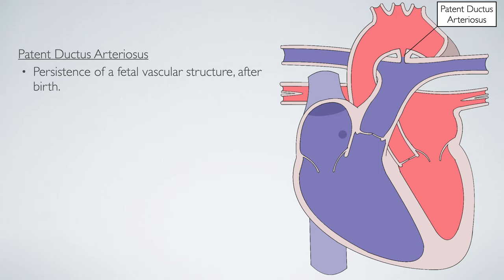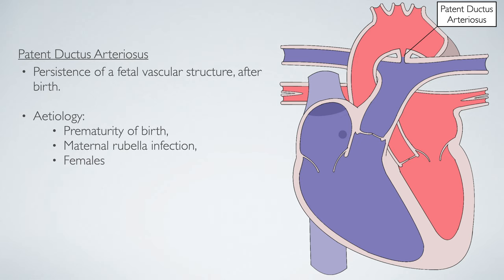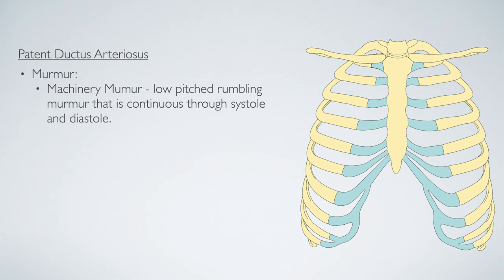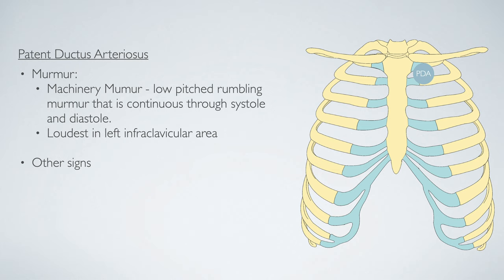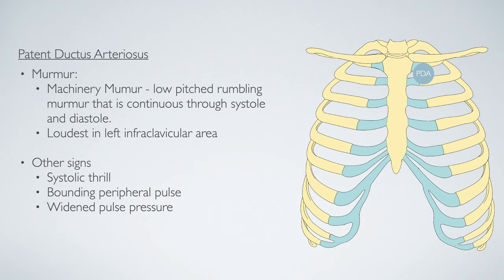The patent ductus arteriosus is the persistence of a fetal vascular structure after birth. There is increased risk with premature birth, maternal rubella infection during pregnancy, and female gender. The history may present with shortness of breath, recurrent respiratory infections, or failure to thrive. The patent ductus arteriosus produces a machinery murmur — a low-pitched, continuous rumbling murmur throughout systole and diastole — loudest in the left infraclavicular area. Other clinical signs include a systolic thrill, bounding peripheral pulse, and widened pulse pressure.